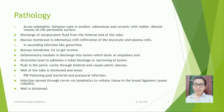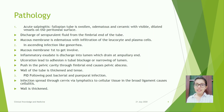Pus in the pelvic cavity through the fimbriated end causes pelvic abscess. The wall of the tube is thickened and tense. PID following post-abortal and puerperal infections spread through the cervix by lymphatics to the cellular tissue and broad ligament, causing cellulitis. The wall is thickened.